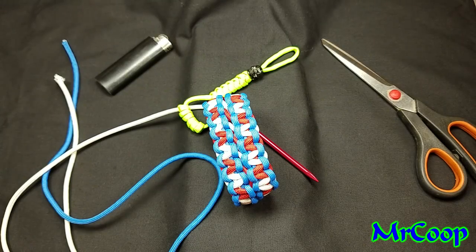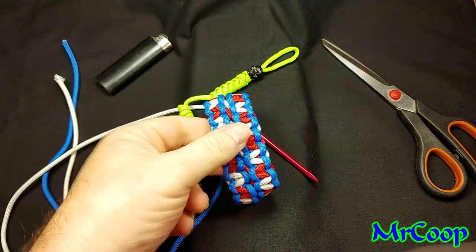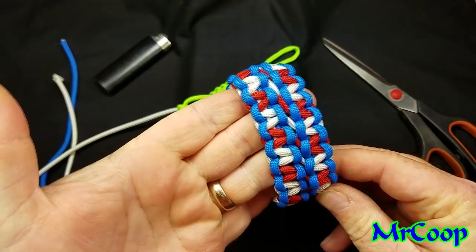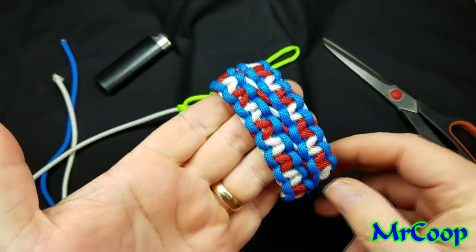Hey guys, Coop here. Let's make a bracelet. Now what you guys see here, this is the double wide Cobra slash Solomon bar.